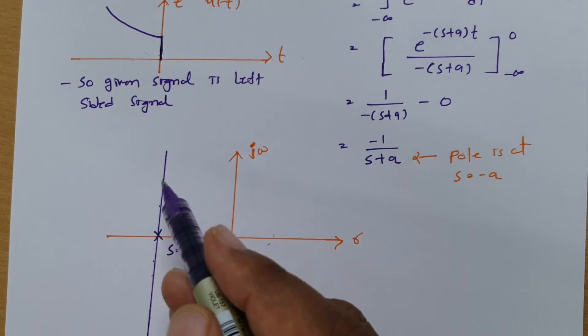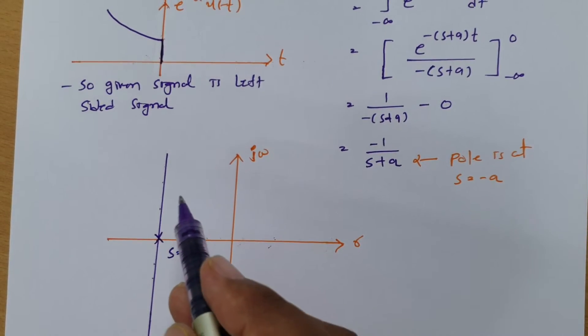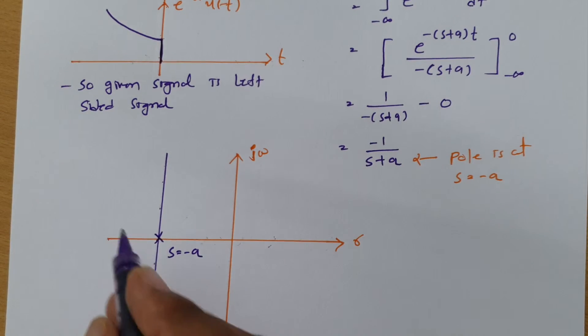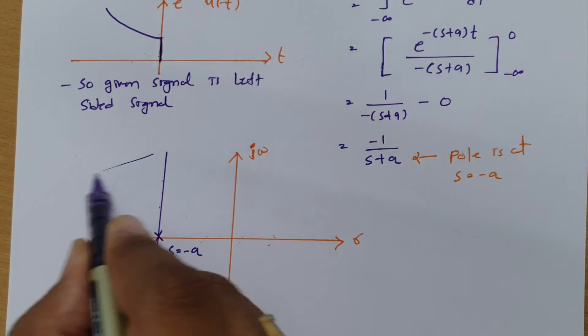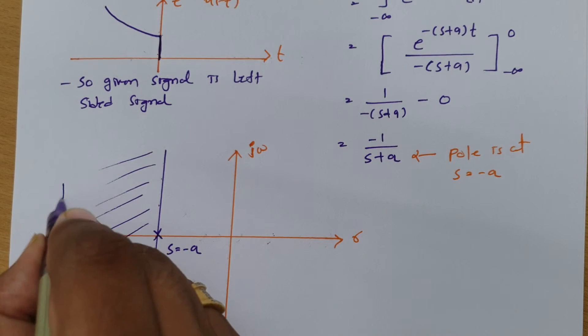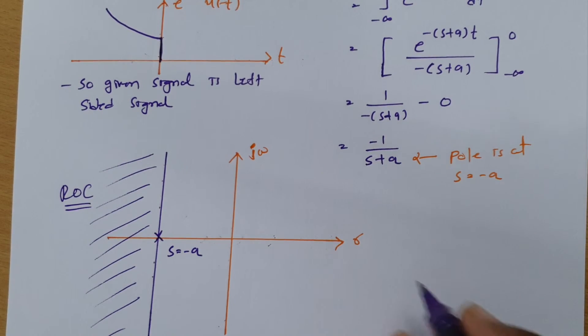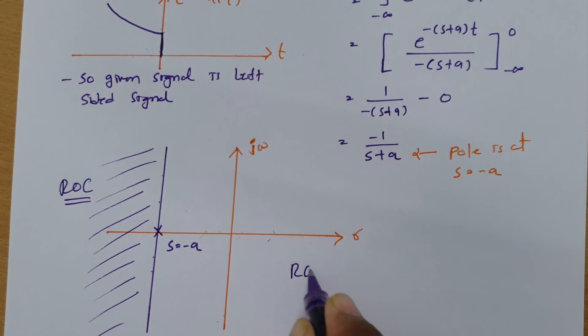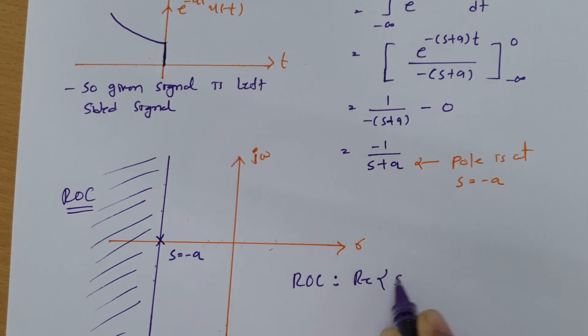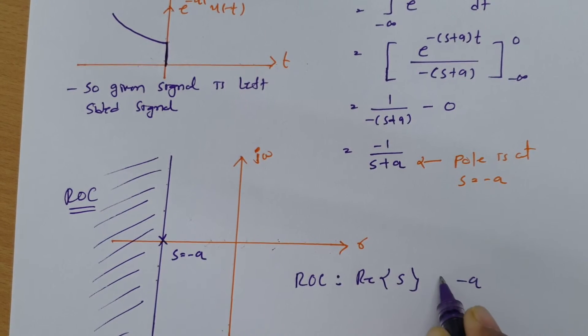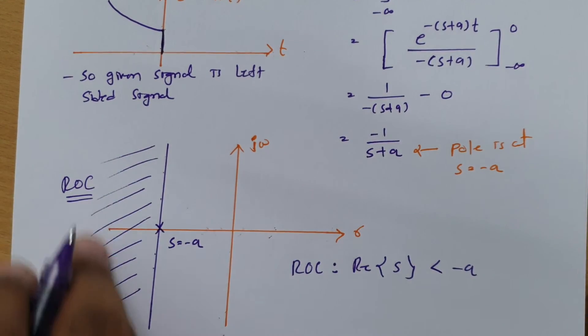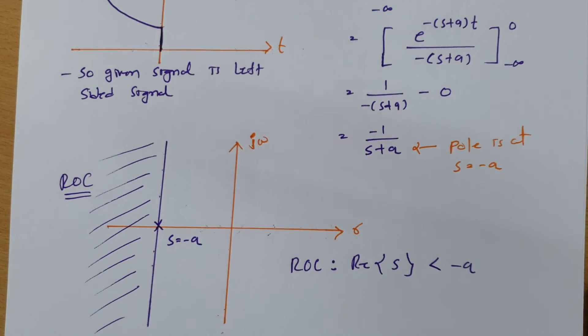Now see, the signal is left sided. Since the signal is left sided, ROC will be in the left side of this parallel line. So the left side, that is this side, is where we will be finding the ROC. We can define it by ROC in the region of real part of s, and that should be lower than minus a. This is the region with ROC.